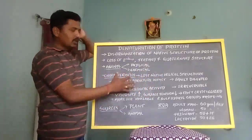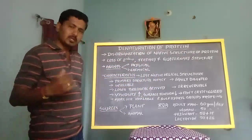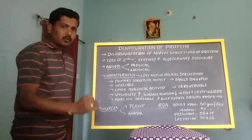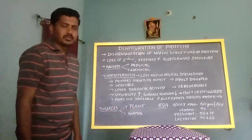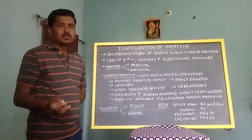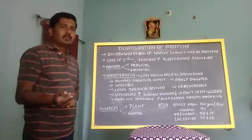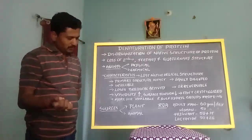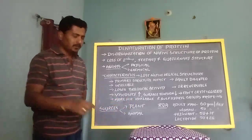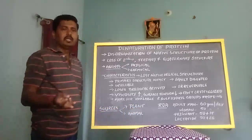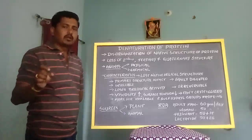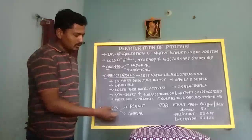These are the characteristics related to denaturation of proteins. Next, we will discuss sources of protein and recommended dietary amounts. Sources of protein are classified into plant origin and animal origin. Plant sources include almonds, groundnut, Bengal gram, soya beans, sunflower oil seeds, peanuts, wheat, and rice, which are the richest sources of plant protein. Animal sources include meat, chicken, egg, milk, curd, liver, and fish.